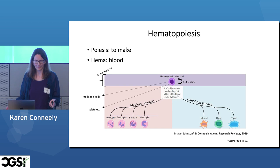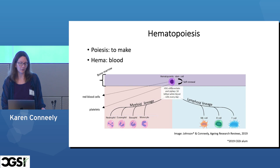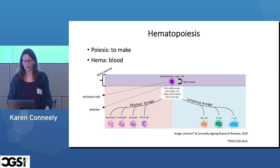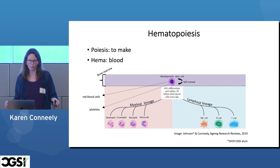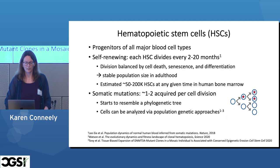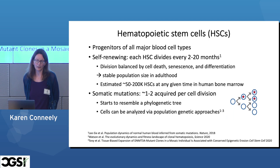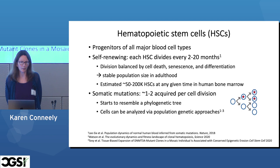Now that we're talking about hematopoiesis, that brings us to clonal hematopoiesis. Hematopoiesis really just means making blood. We have stem cells in our bone marrow called hematopoietic stem cells, responsible for making all of our different blood cells, including red blood cells, platelets, and the white blood cells or immune cells. We have our myeloid lineage and lymphoid lineage, and it all starts with hematopoietic stem cells that can keep replacing ten million white blood cells every day. They also replenish themselves through self-renewal, and each hematopoietic stem cell divides every 2 to 20 months to balance out loss through cell death and differentiation, leading to a stable population.